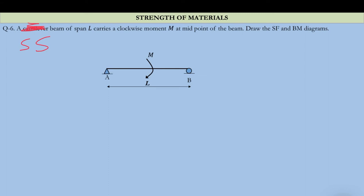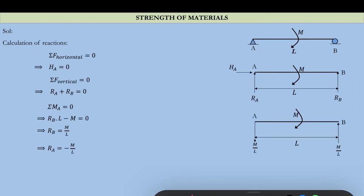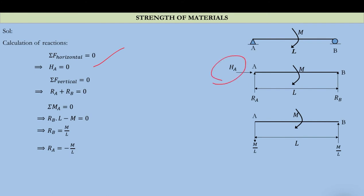Let us determine the reactions. There is no horizontal reaction because there is no applied horizontal force, so HA equals zero. Ra plus Rb again equals zero because there is no external applied vertical load — only the moment is there. The reactions are the same; the reaction does not change by the location of the applied external moment. Ra is minus m/L downward and Rb is m/L upward.